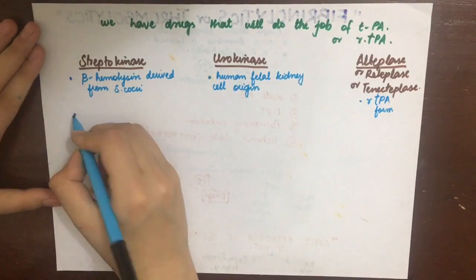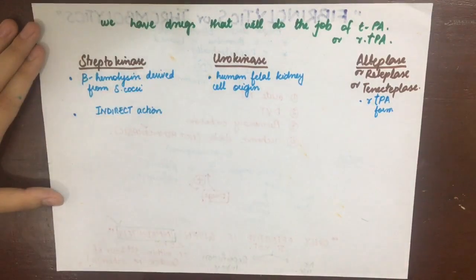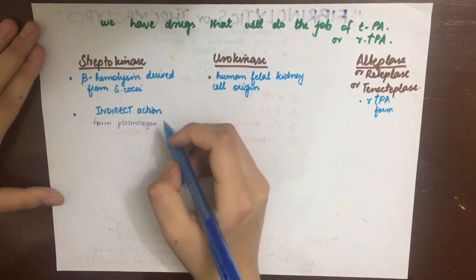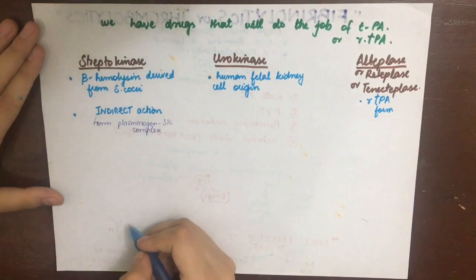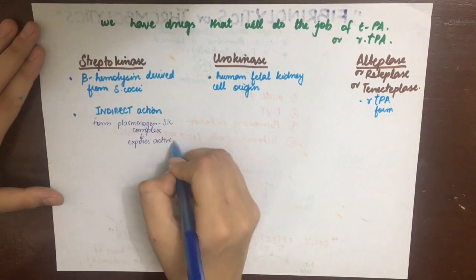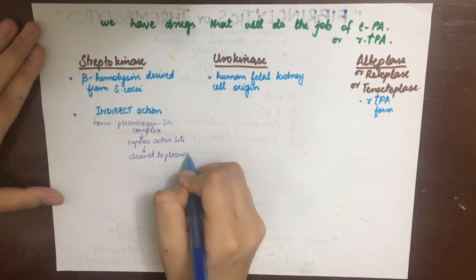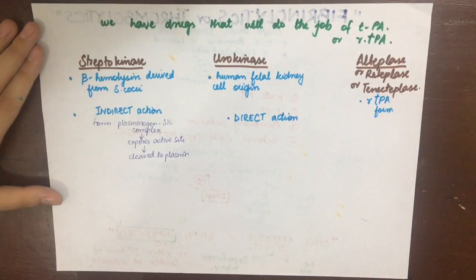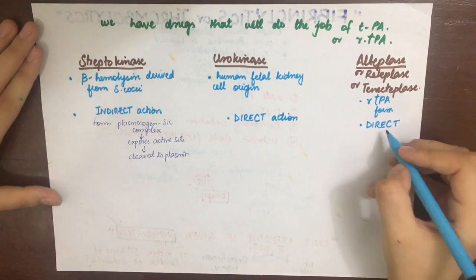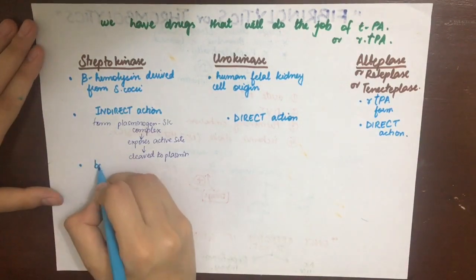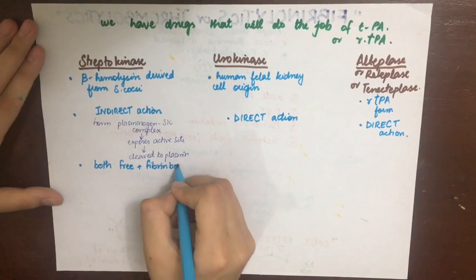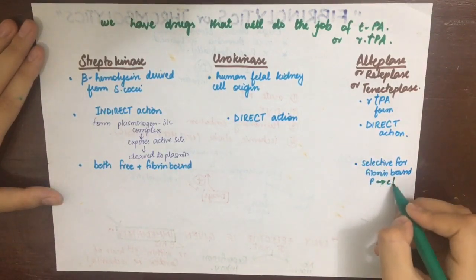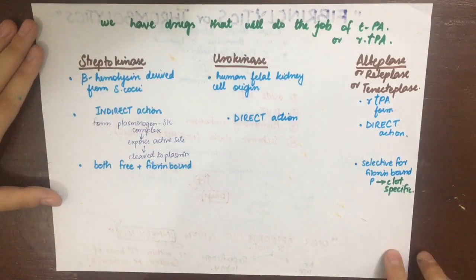Streptokinase has an indirect action on plasminogen and acts on both the free and fibrin-bound forms — it forms a streptokinase-plasminogen complex which exposes active sites and cleaves plasminogen to active plasmin. Urokinase has a direct action, and so does alteplase. Alteplase only acts on the fibrin-bound form of plasminogen, making it more clot-specific with less or no bleeding as a side effect.